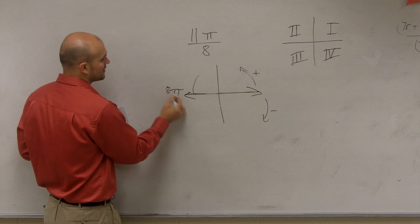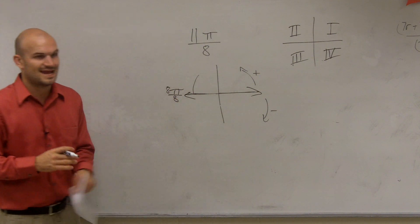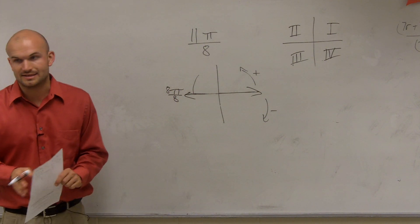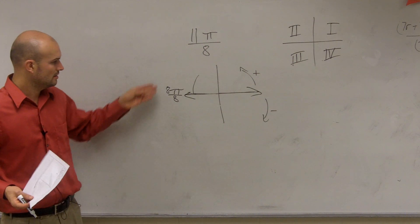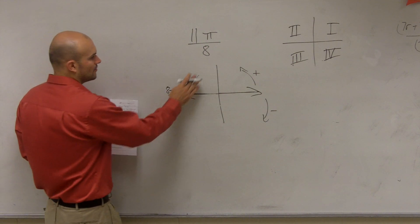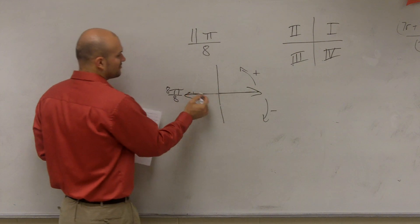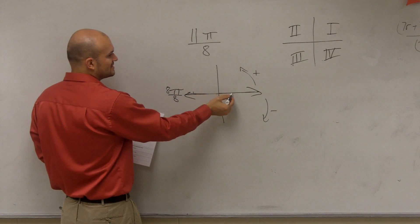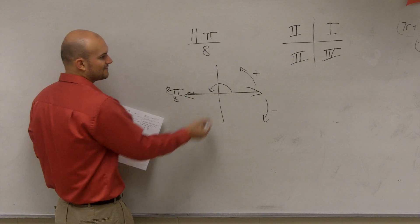So therefore, I could really write pi as 8 eighths, right? Because 8 divided by 8 is 1, and 1 times pi would be still pi. So if we think about this, if I was going to break this thing, that means I could break this distance from here to here into 8 different parts.